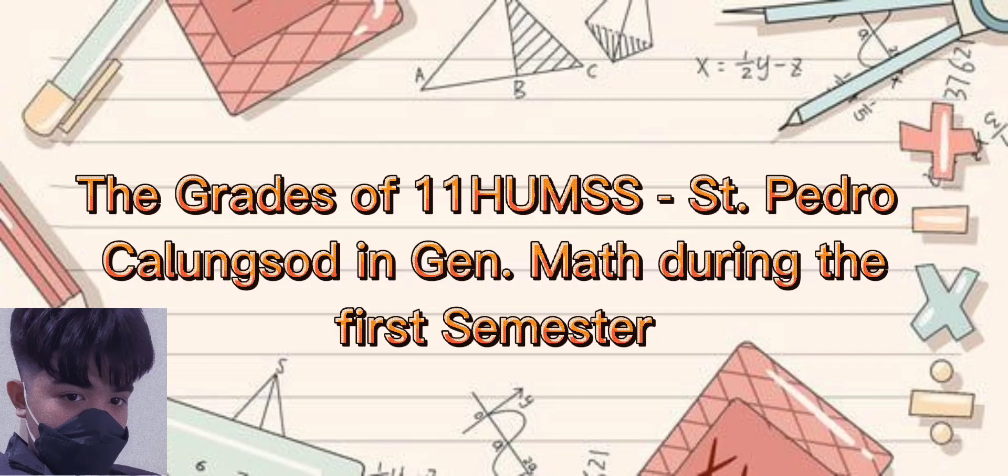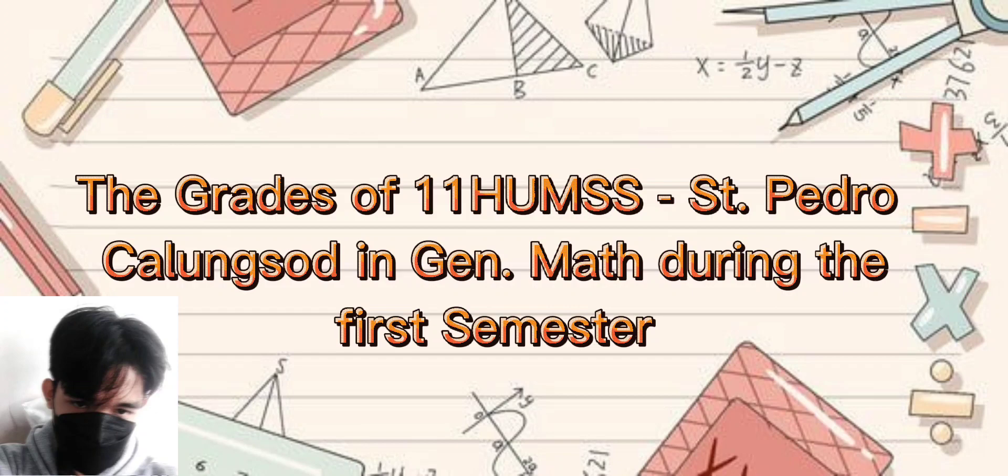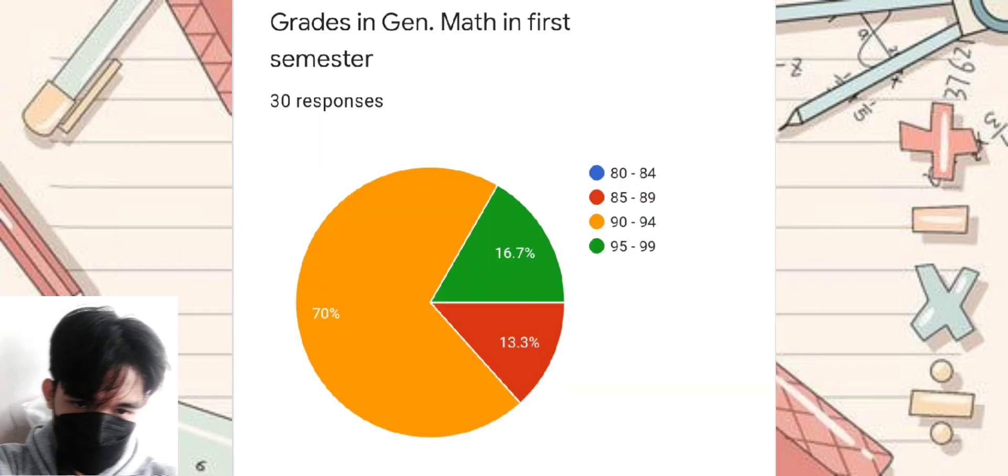That is all about the grades of 30 students of 11 HUMSS, St. Pedro Calungsod, in GenMath during the first semester. In order for us to know the grades, we made the survey and here are the results.